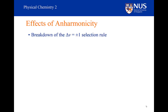The way to think about this is that anharmonicity is a small perturbation to the harmonic problem. The harmonic problem rigorously had a selection rule that delta V was equal to plus or minus 1. That selection rule gets broken down because of this small perturbation. But because it is a small perturbation, it means that the intensities of anything that breaks the harmonic rule are much weaker.